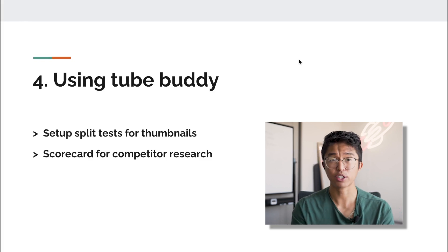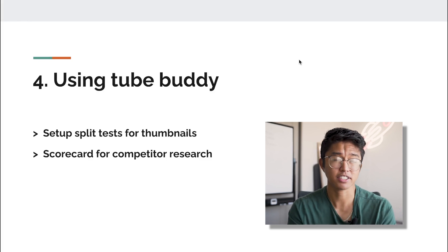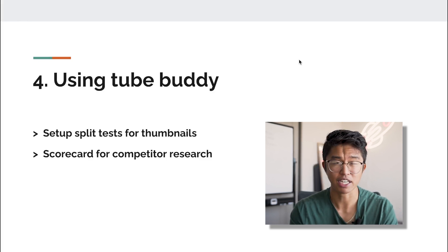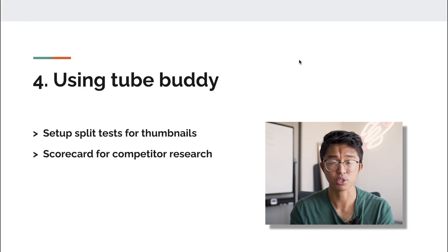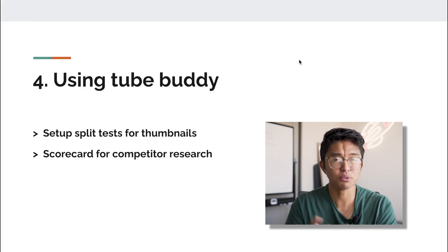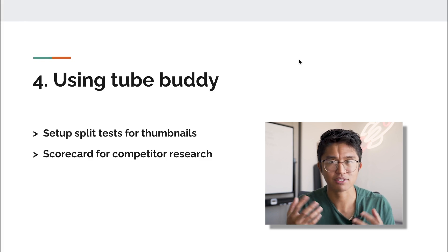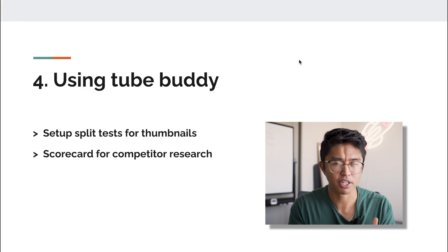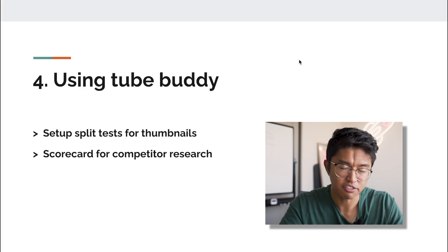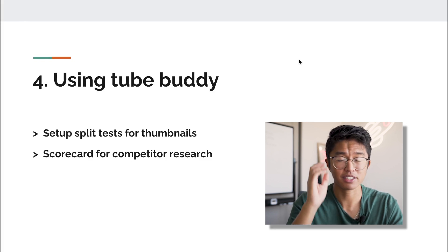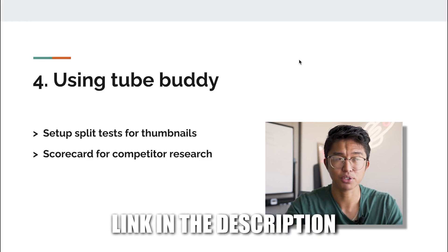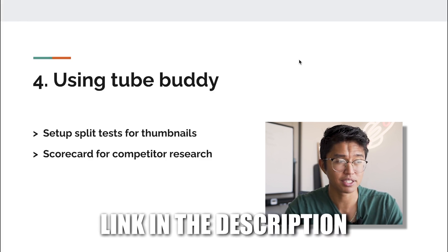If a video that goes viral ends up making $3,000, $7,000, or $10,000 over the course of its lifetime, TubeBuddy is only about $300 per year, so it's definitely worth the money. I do have an affiliate link in the description below if you're interested.